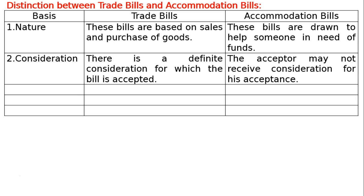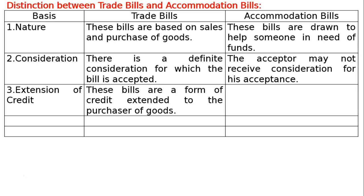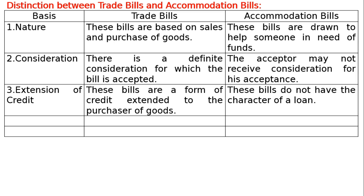The third basis is Extension of Credit. In case of trade bills, these bills are a form of credit extended to the purchaser of goods. In case of accommodation bills, these bills do not have the character of a loan.